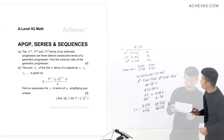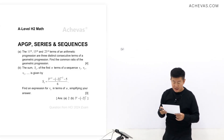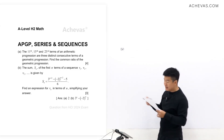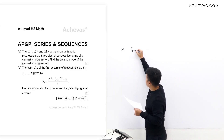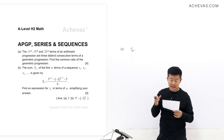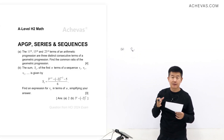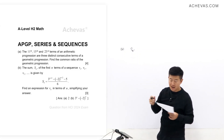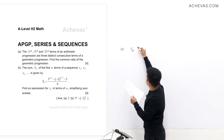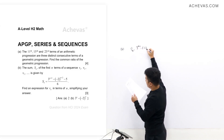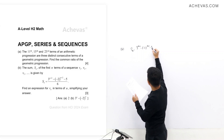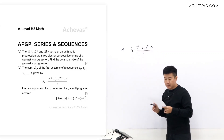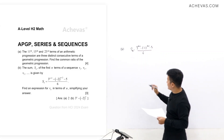In Part B, we are given S_n, which represents V₁ + V₂ + V₃ + … + V_n. S_n = [3^(n+2) − (−2)^(n+2) − 5] / 6, and we are supposed to find V_n.